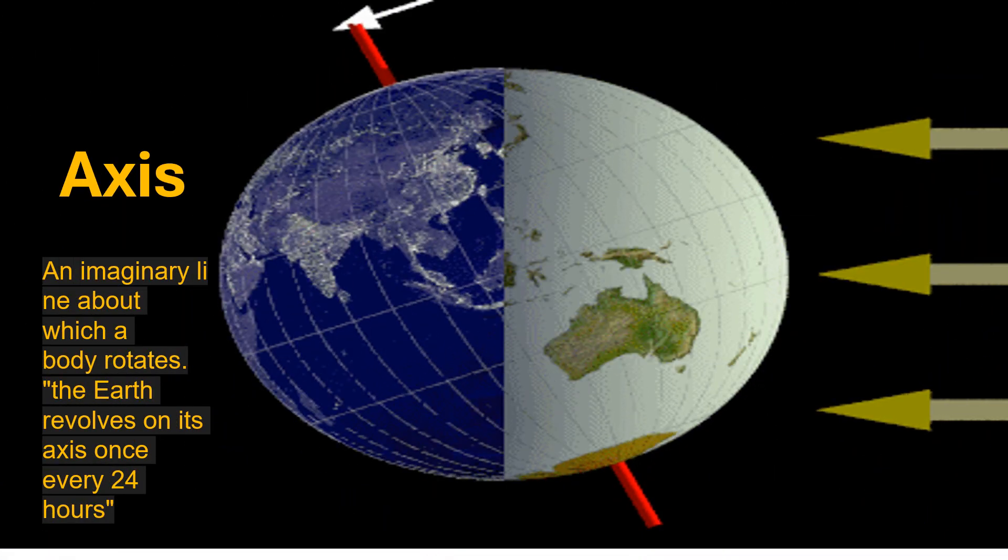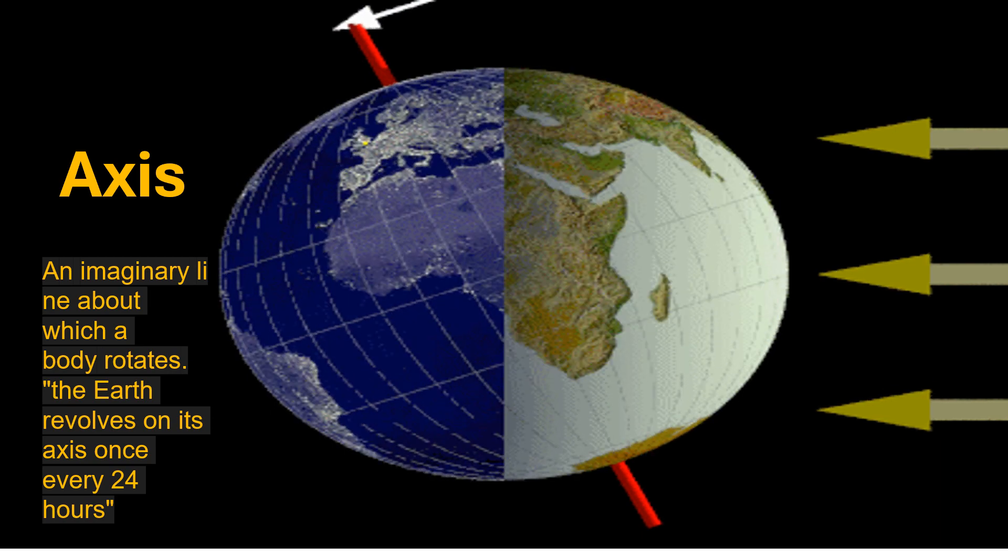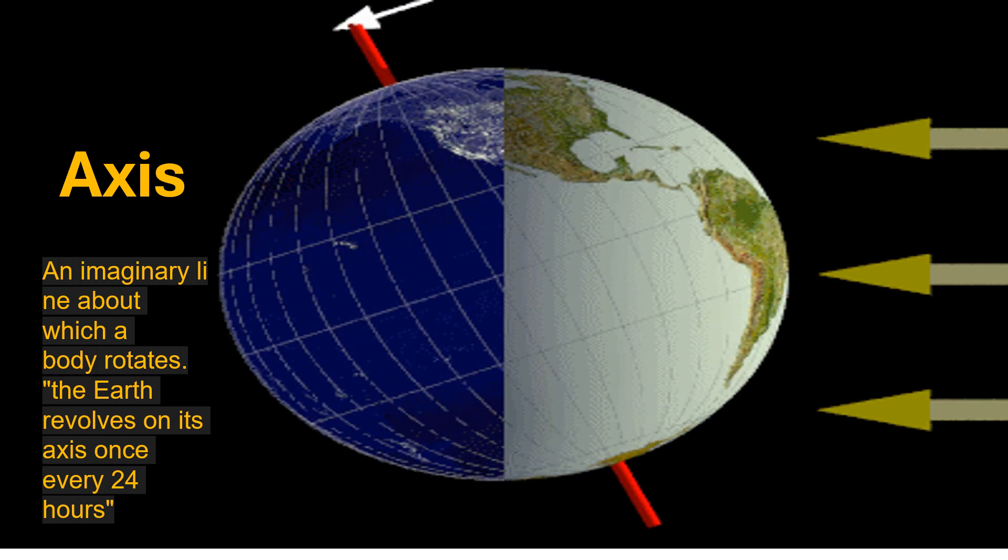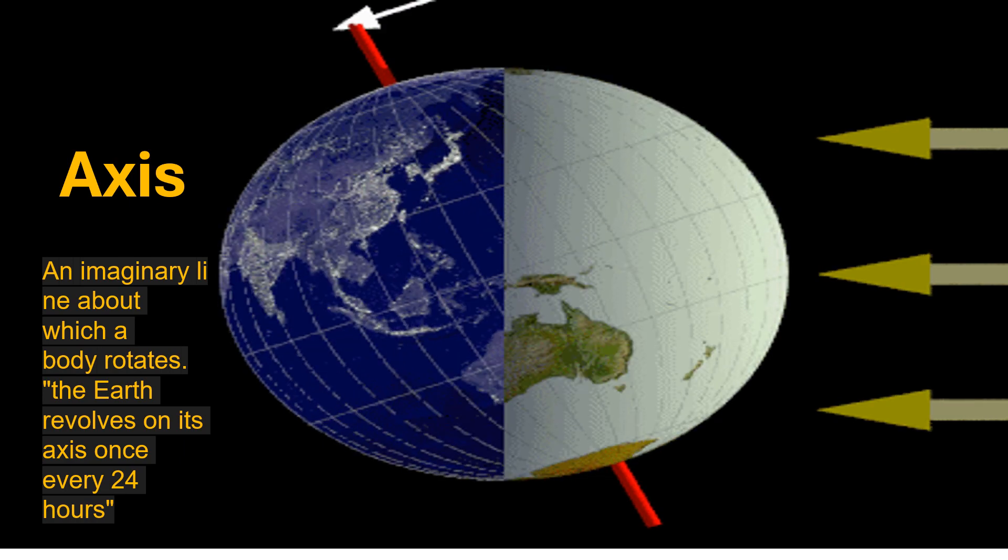Axis: It is an imaginary line about which a body rotates. The Earth revolves on its axis once every 24 hours.